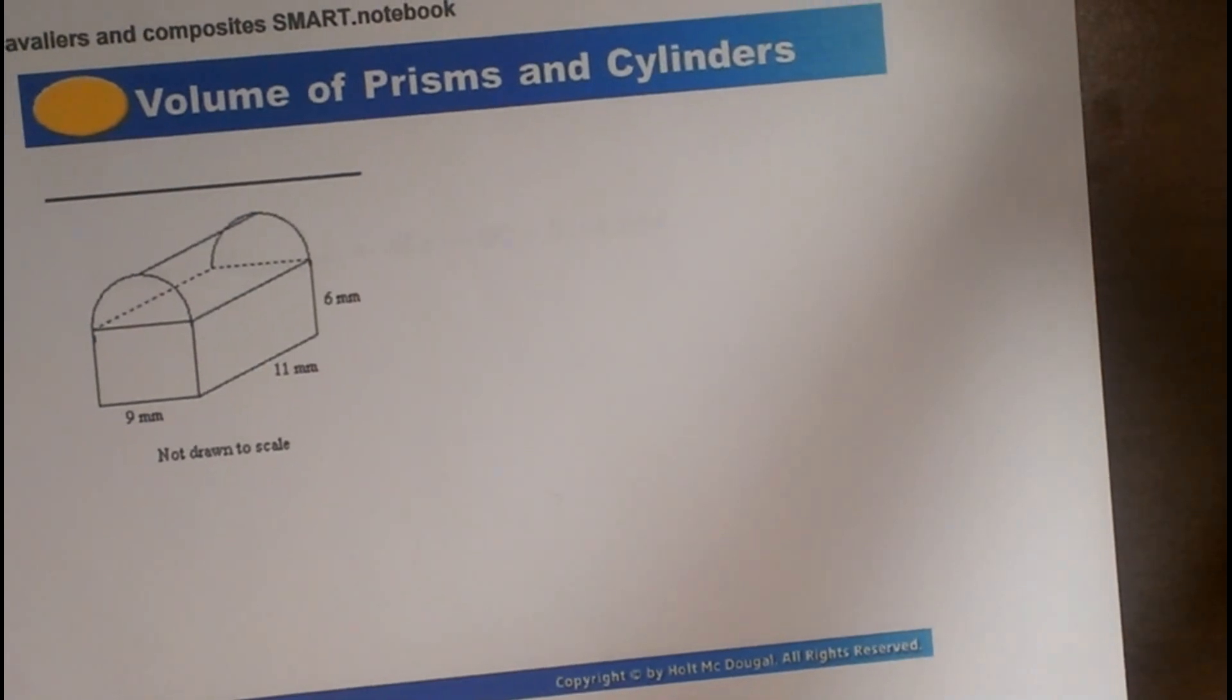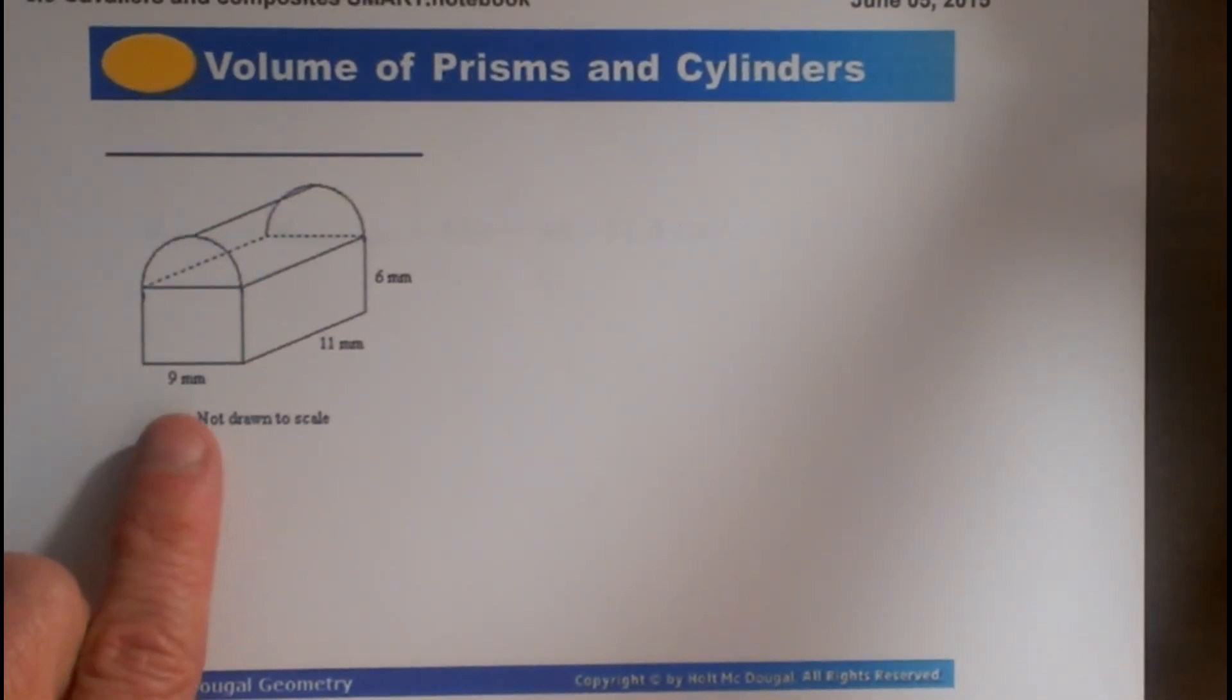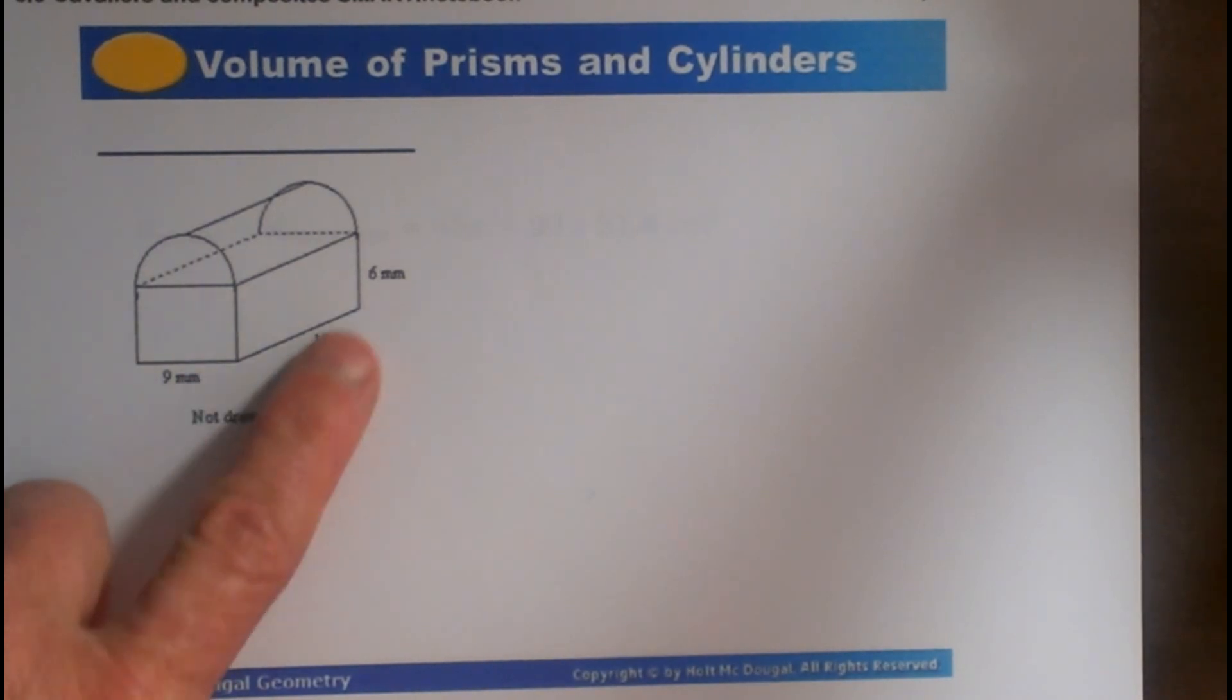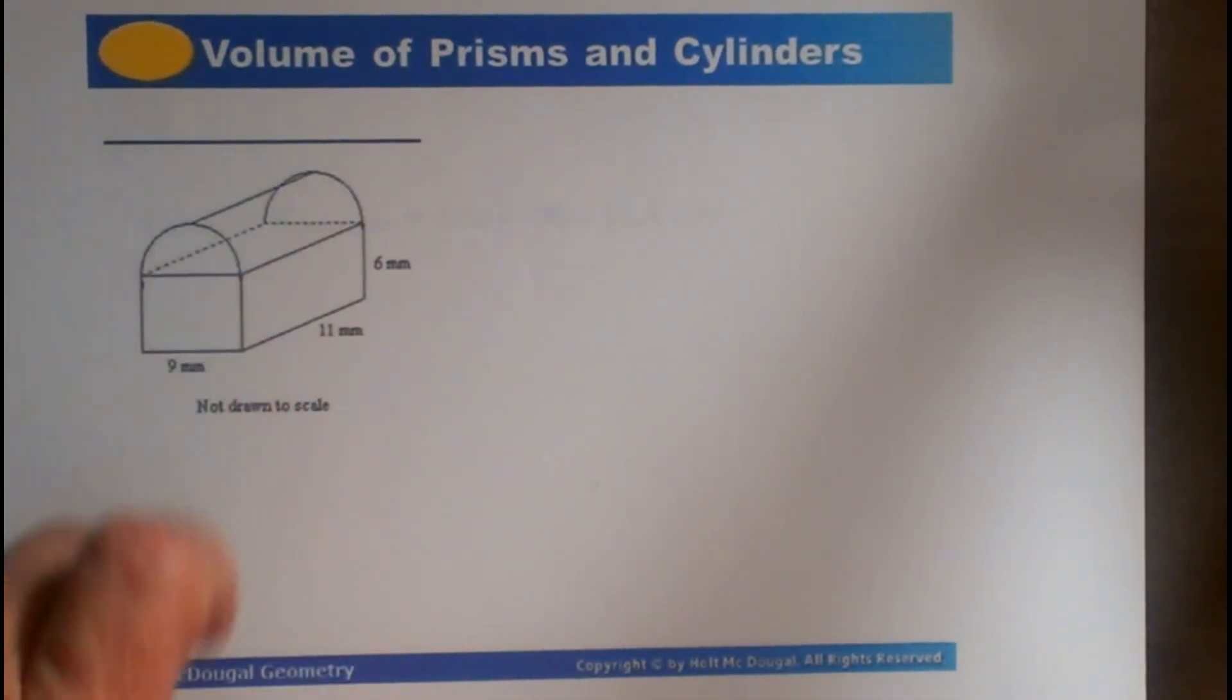Let's look at a couple more of these composite figures. This next composite figure is a rectangular prism topped off with a cylinder. But what do you notice about the cylinder? The cylinder is only half of a cylinder.